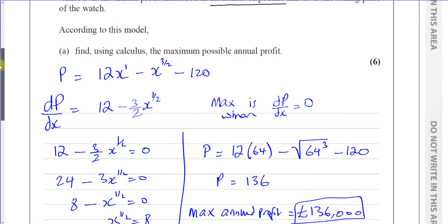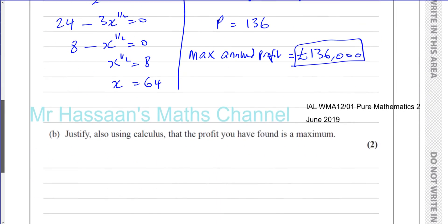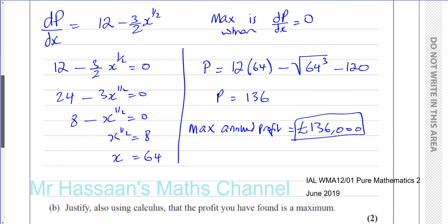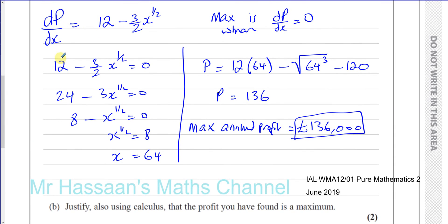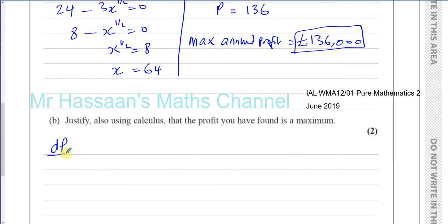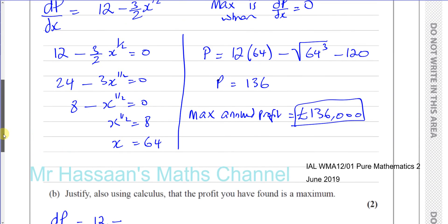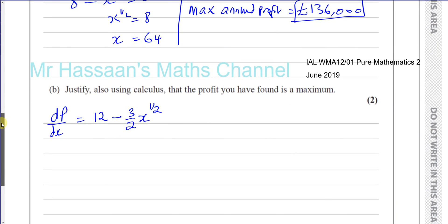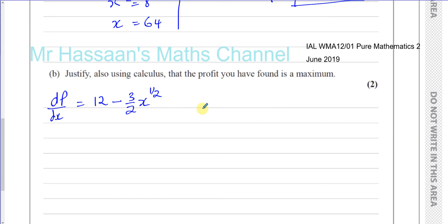Part B says: justify, also using calculus, that the profit you found is a maximum. We need to use our first differential as a starting point. So dP/dx was equal to 12 minus 3/2 times X to the power of a half. We need to work out what is happening to the gradient at that point.